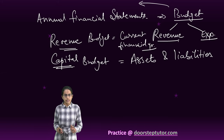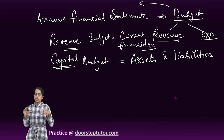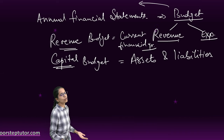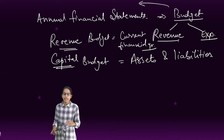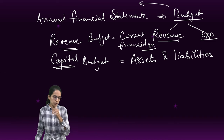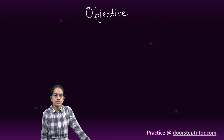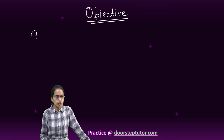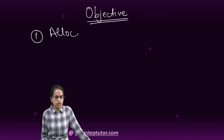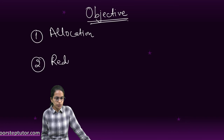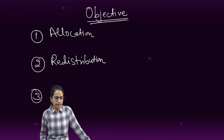Under the revenue budget I am focusing only on the current financial year. Under the capital budget I talk about the assets and liabilities that the country would have. The objectives of a budget are threefold: allocation, redistribution, and stabilization.